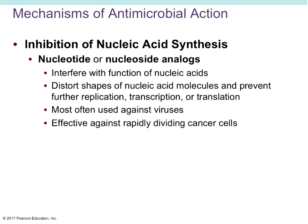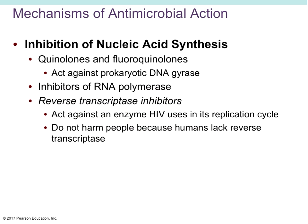Nucleotide and nucleoside analogues are a method of controlling microbial growth — they interfere with the function of nucleic acids by screwing with the shape of those molecules, keeping them from further replicating or going through protein synthesis, so you're not getting the proteins out that are needed for cell survival. These drugs are most useful against viruses because viruses are essentially just a capsid surrounding genetic material. Once we can reach the genetic material and disrupt instructions for the virus, it's no longer effective. Nucleotide and nucleoside analogues are also effective against rapidly dividing cancer cells.